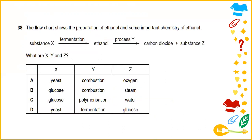The flowchart shows the preparation of ethanol and some important chemistry of ethanol. Substance X undergoes fermentation to produce ethanol, and then through process Y it produces carbon dioxide plus substance Z. The answer is glucose undergoes fermentation to ethanol via combustion process to produce carbon dioxide and steam. The answer would be glucose, combustion to produce carbon dioxide and steam.